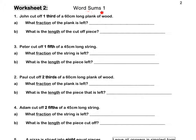Word Sums 1. John cuts off one third of a 60cm long plank of wood. If we divide the plank into thirds, he has cut off one third. What fraction of the plank is left? Two thirds is left.